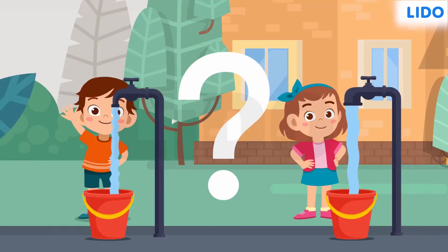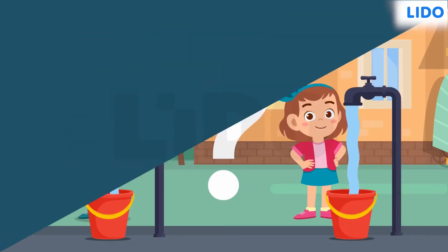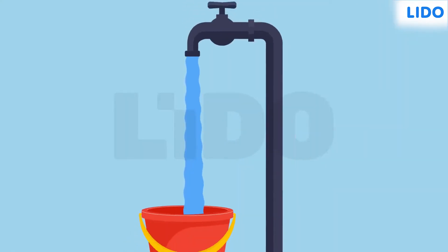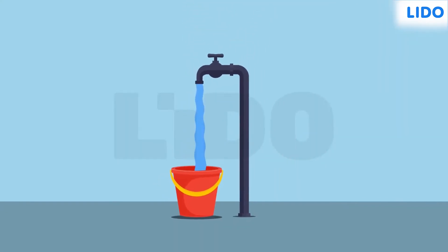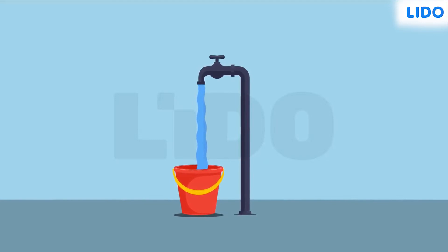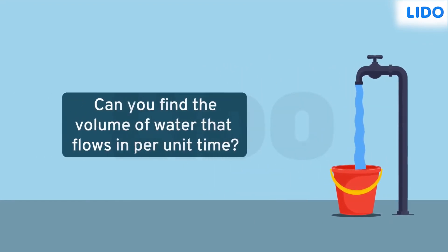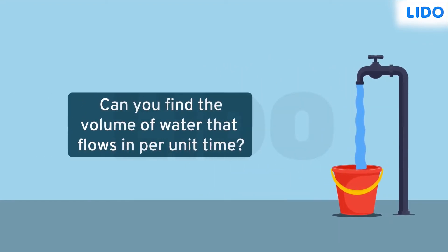To answer that, let's learn some math related to the flow of water through a pipe. If water is flowing through a hose pipe, is it possible to calculate the volume of water that flows per unit of time?